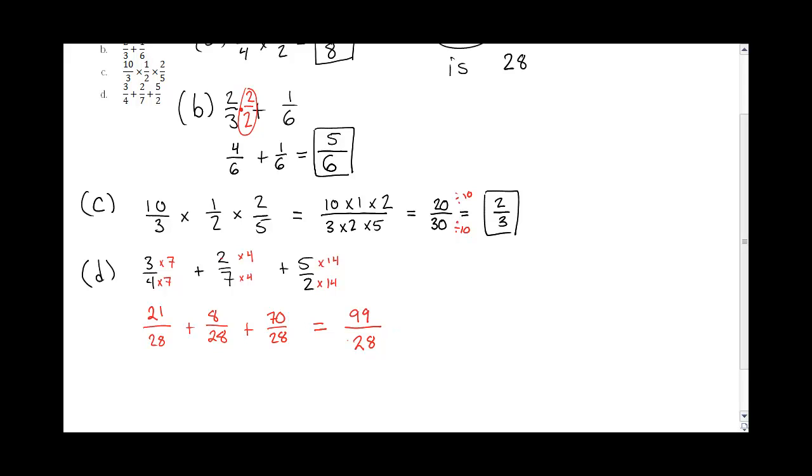21 plus 8 plus 70, that is 99. And now, can I simplify that? Let's see here. Is there a number that can go into both of those? Let's see. Nope, I don't think so. So I think if I tried a bunch of different ones, that wouldn't work. So then I'm going to call it quits right there.